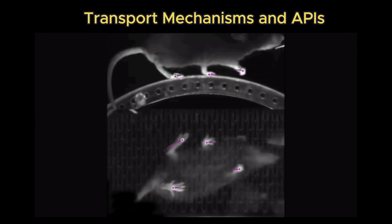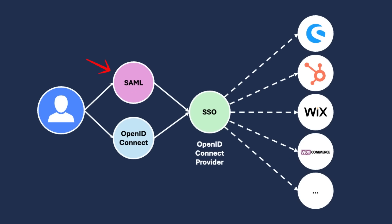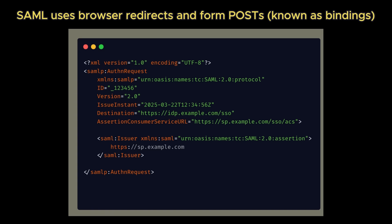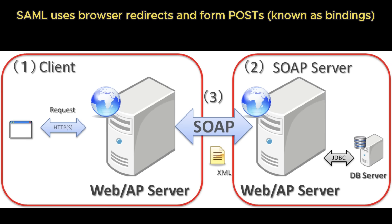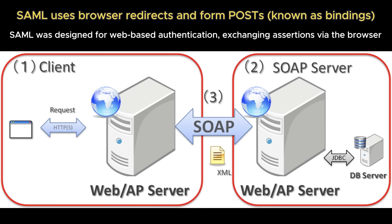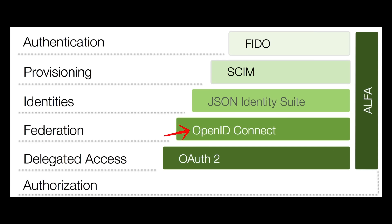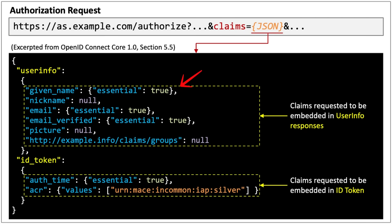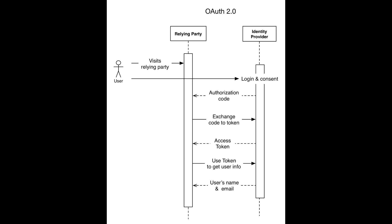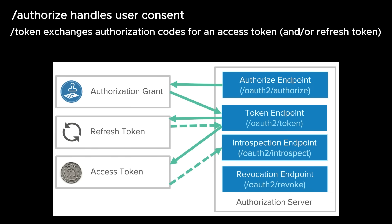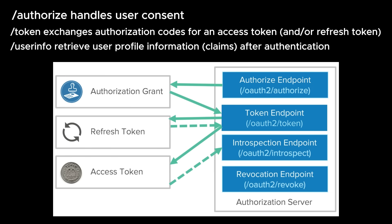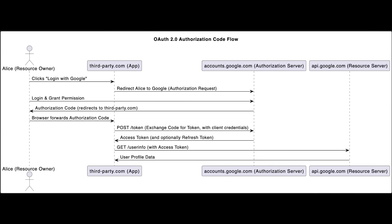SAML was built before REST became dominant. It primarily uses browser redirects and form posts to move XML assertions between providers, making it ideal for browser-based SSO but ill-suited for backend-to-backend or mobile use. Its reliance on XML digital signatures and certificate metadata adds complexity but ensures strong enterprise-grade trust guarantees. OIDC is built on OAuth 2.0 and relies on HTTPS APIs and JSON responses. Communication happens over well-defined endpoints — /authorize, /token, and /userinfo — and tokens are passed via standard HTTP headers. This REST-based design makes it a natural fit for modern microservices, mobile apps, and cloud architectures.